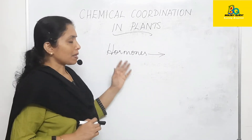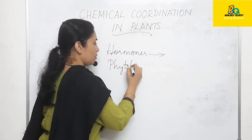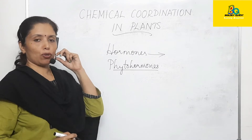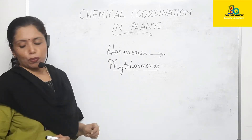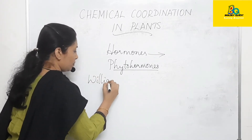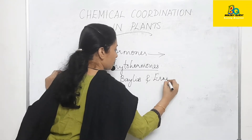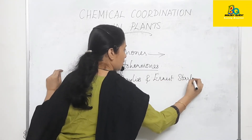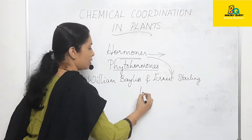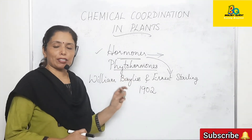These chemical substances or hormones present in plants are called phytohormones. The term hormone was coined by William Bayliss and Ernest Starling in the year 1902. And we have already seen that the hormones present in plants are called phytohormones.